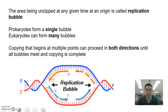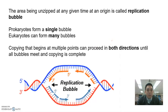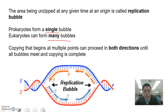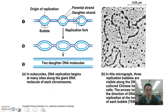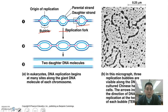At those origins of replication, it creates a replication bubble. You can imagine it as the two strands of DNA being separated. At the replication bubble, there may be more than one site. Prokaryotes only form a single bubble, while eukaryotes can form many bubbles. At these replication bubbles, you can find helicase at either side of the replication bubble, and it's going to go in both directions until all bubbles meet and copying is complete. We have multiple bubbles here, here, and here, as well as multiple replication forks going in both directions.